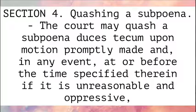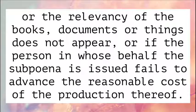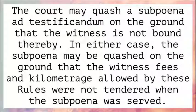Section 4: Quashing a subpoena. The court may quash a subpoena duces tecum upon motion promptly made and in any event at or before the time specified therein if it is unreasonable and oppressive, or the relevancy of the books, documents, or things does not appear, or if the person in whose behalf the subpoena is issued fails to advance the reasonable cost of the production thereof. The court may quash a subpoena ad testificandum on the ground that the witness is not bound thereby. In either case, the subpoena may be quashed on the ground that the witness fees and kilometrage allowed by these rules were not tendered when the subpoena was served.